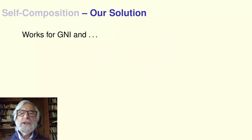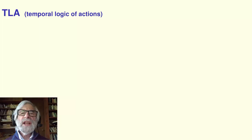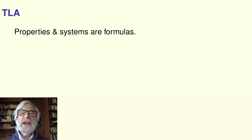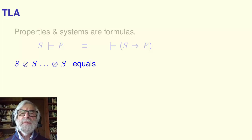Here is our solution. It works for some additional security properties, including GNI. We use the temporal logic TLA. TLA has industrial strength tools and is used by engineers who build large distributed systems. TLA describes systems as well as properties as formulas. System S satisfies property P means that the formula S implies P is true.